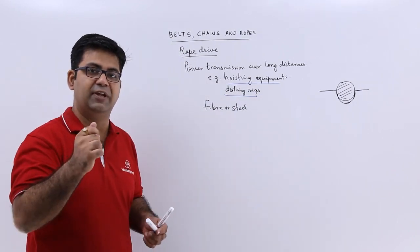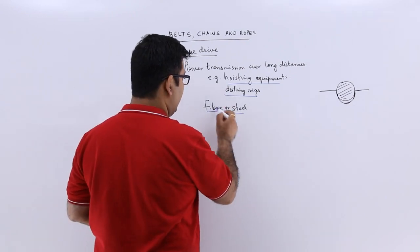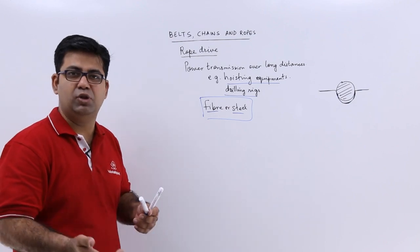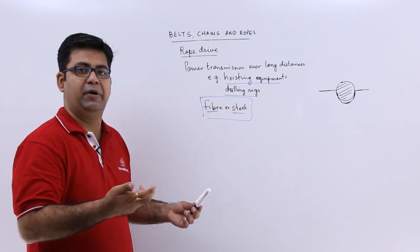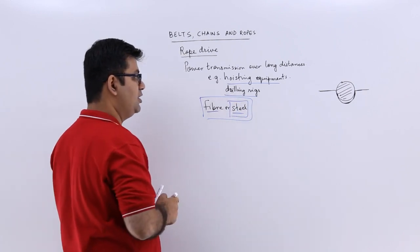Now the rope that we use is mostly made up of fiber or steel. Very seldom we use ropes made of jute or very weak material. So mostly in industrial applications you will see steel ropes.